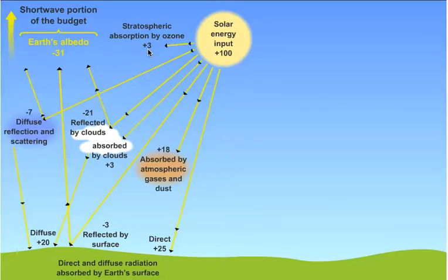What happened to those remaining 45 units of solar energy? 25 are directly absorbed by the Earth's surface. Nearly as much, 20%, is actually diffuse radiation that's scattered forward towards the surface. The reason that we look up into the atmosphere